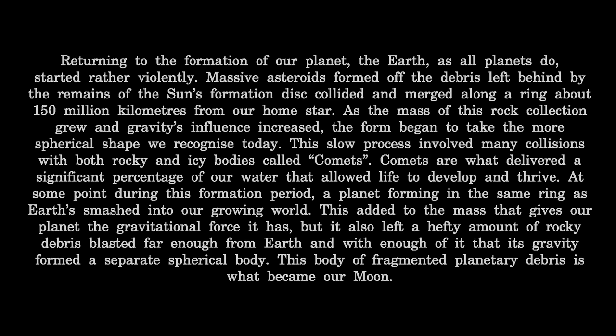Returning to the formation of our planet — the Earth, as all planets do, started rather violently. Massive asteroids formed off the debris left behind by the remains of the Sun's formation disk collided and merged along a ring about 150 million kilometers from our home star. As the mass of this rock collection grew and gravity's influence increased, the form began to take the more spherical shape we recognize today. This slow process involved many collisions with both rocky and icy bodies called comets. Comets are what delivered a significant percentage of our water that allowed life to develop and thrive. At some point during this formation period, a planet forming in the same ring as Earth's smashed into our growing world, and the debris that resulted formed a separate spherical body — our Moon.